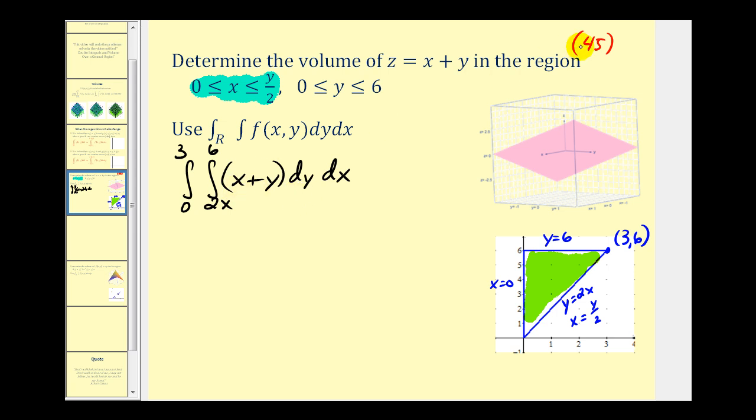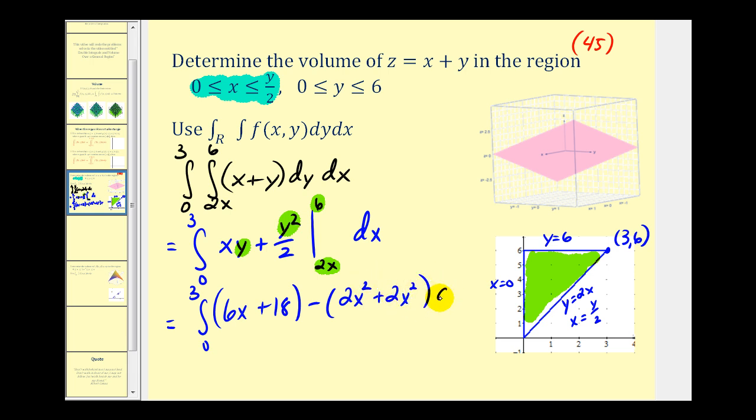Looking at how this region is bounded vertically, it's bounded below by y equals 2x and above by y equals 6. For x the interval is from 0 to 3. We know this should equal 45 but let's check it. Treating x as a constant we'll have xy plus y squared over 2. Now we'll replace y with 6 and 2x. We'll have 6x plus 6 squared over 2, that's 18, minus 2x squared minus 4x squared divided by 2 or 2x squared.